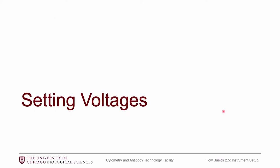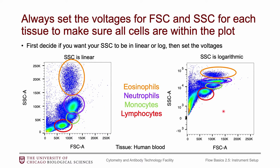Moving on to setting voltages. The first thing to decide is whether you want your side scatter in linear or log — it honestly doesn't matter, it's just a preference. Log is probably slightly more commonly used and is useful when you have a variety of cell types. For example, with eosinophils — which are very granular — and lymphocytes that are not granular, log ensures all cells are on the plot. In linear they get cut off a bit, but linear can be useful if you're using side scatter to actually separate populations, as you get a little better separation.